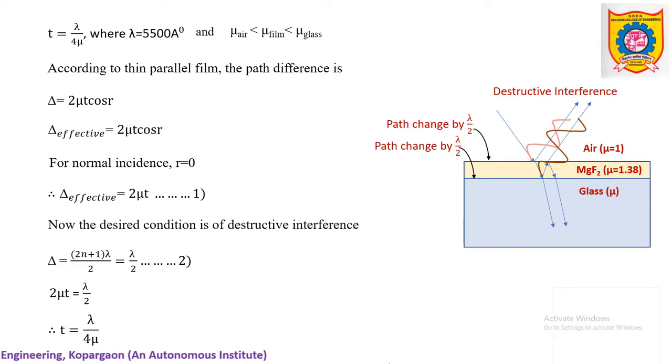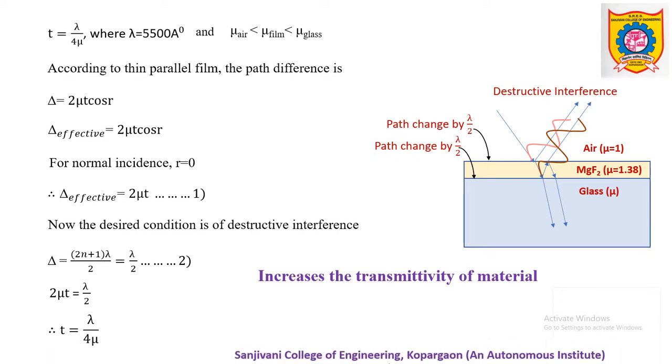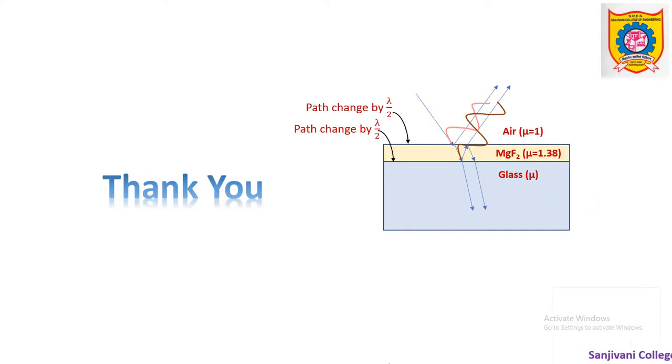This way we can say that when the material is deposited on glass to act as anti-reflection film, the refractive index should be between air and glass and the film should have thickness of the order of lambda by 4 mu. Effect can be improved by applying multi-layer coatings. There is concept of single layer coating and multi-layer coating, so using multi-layer coatings better results are obtained. This is about anti-reflection thin film coatings. In the next video, we will discuss the remaining applications of interference. Thank you.